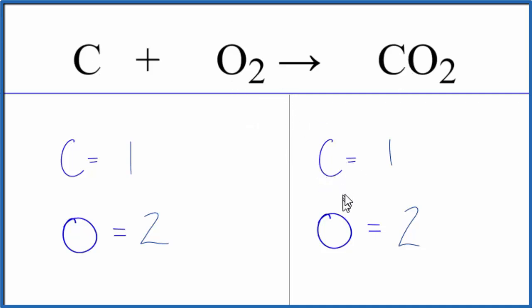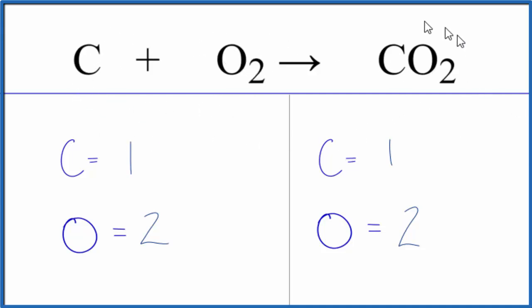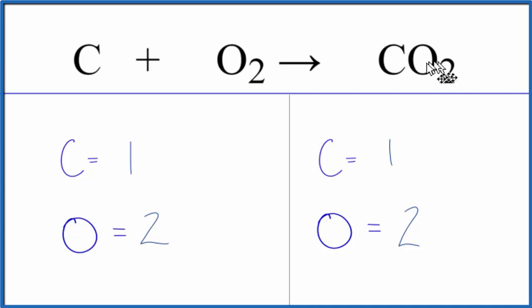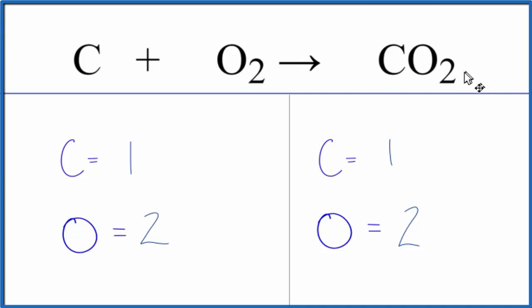One final thing to think about. When we have a chemical reaction, these two substances are combining to form this substance here. So the carbon and the oxygen come together, and they form carbon dioxide. When we're done, we only have carbon dioxide. These two things came together, and now they're all in the carbon dioxide. That makes this a chemical change — we have two things coming together and we have a new substance.